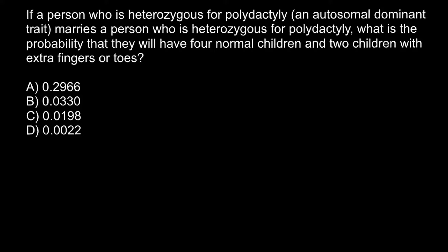Hello and welcome to Nikolai's genetics lessons. Today's video is about how to apply the rules of probability in order to solve genetics problems. Here is a problem: if a person who is heterozygous for polydactyly, an autosomal dominant trait, marries a person who is also heterozygous for polydactyly, what is the probability that they will have four normal children and two children with extra fingers or toes? Polydactyly is a genetic disorder where a person has extra fingers or toes. There are four answers to choose from.